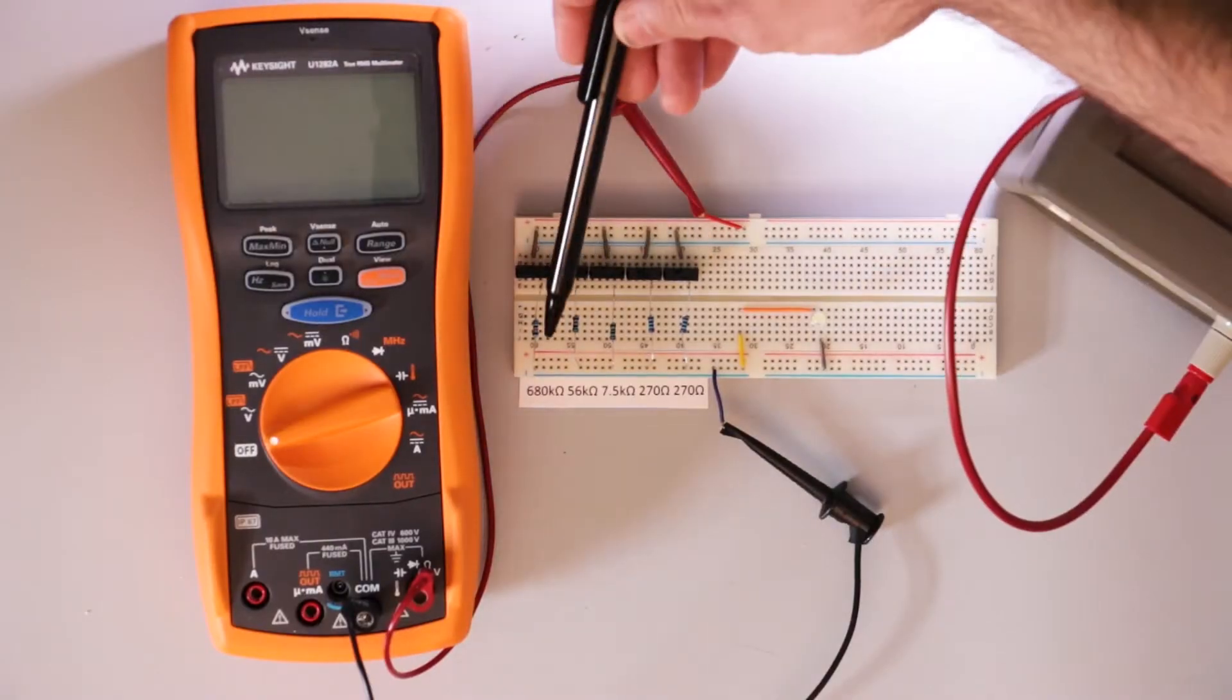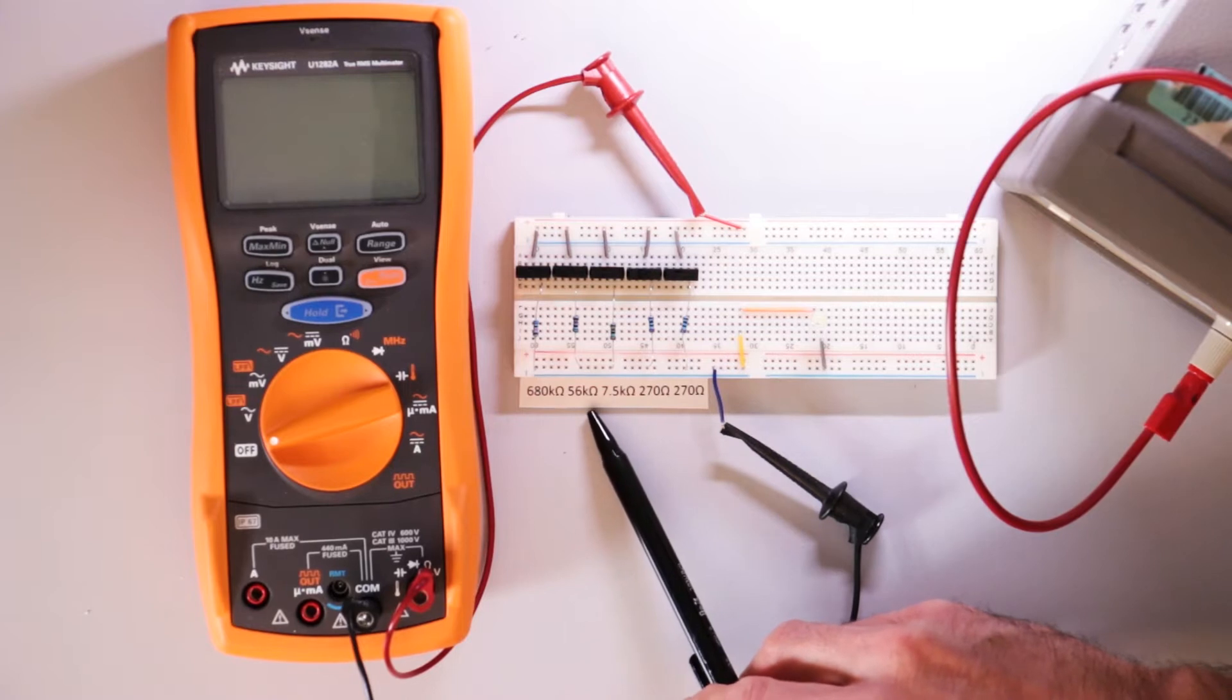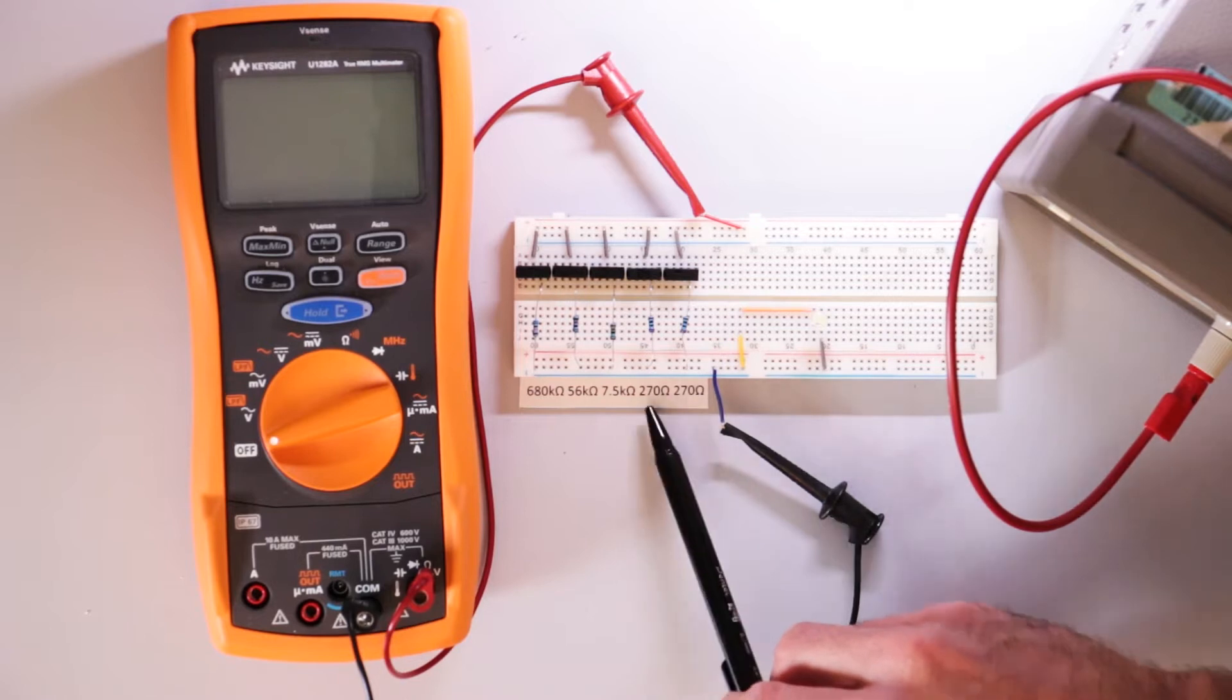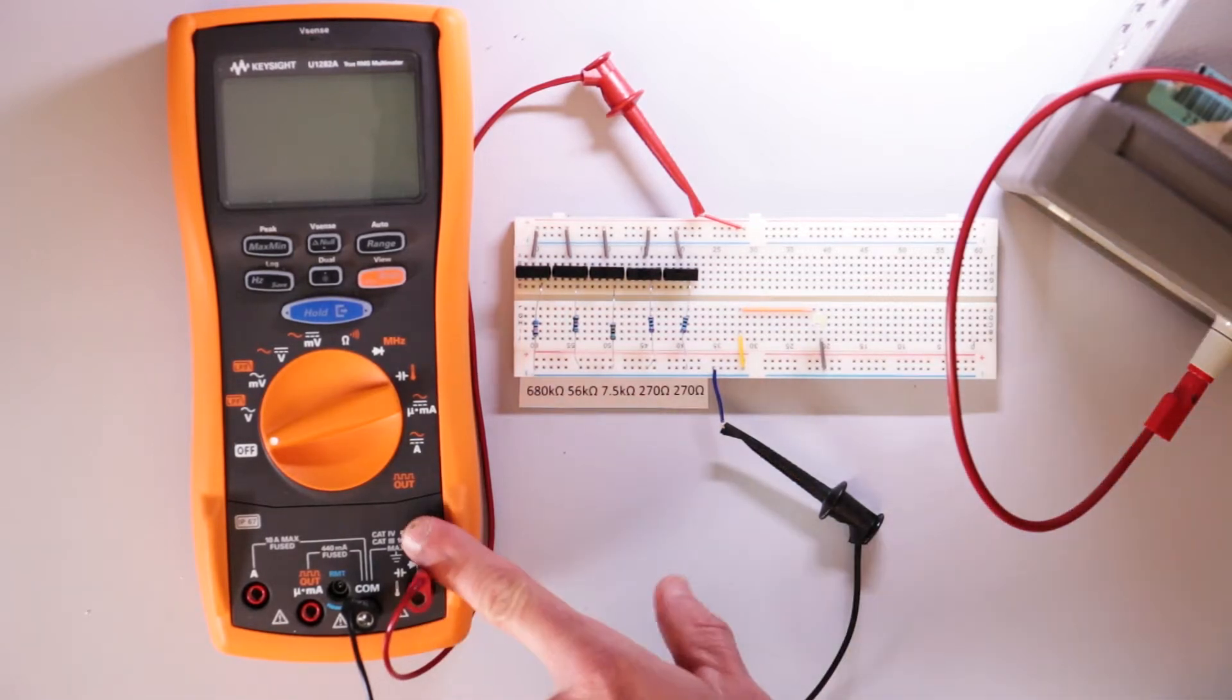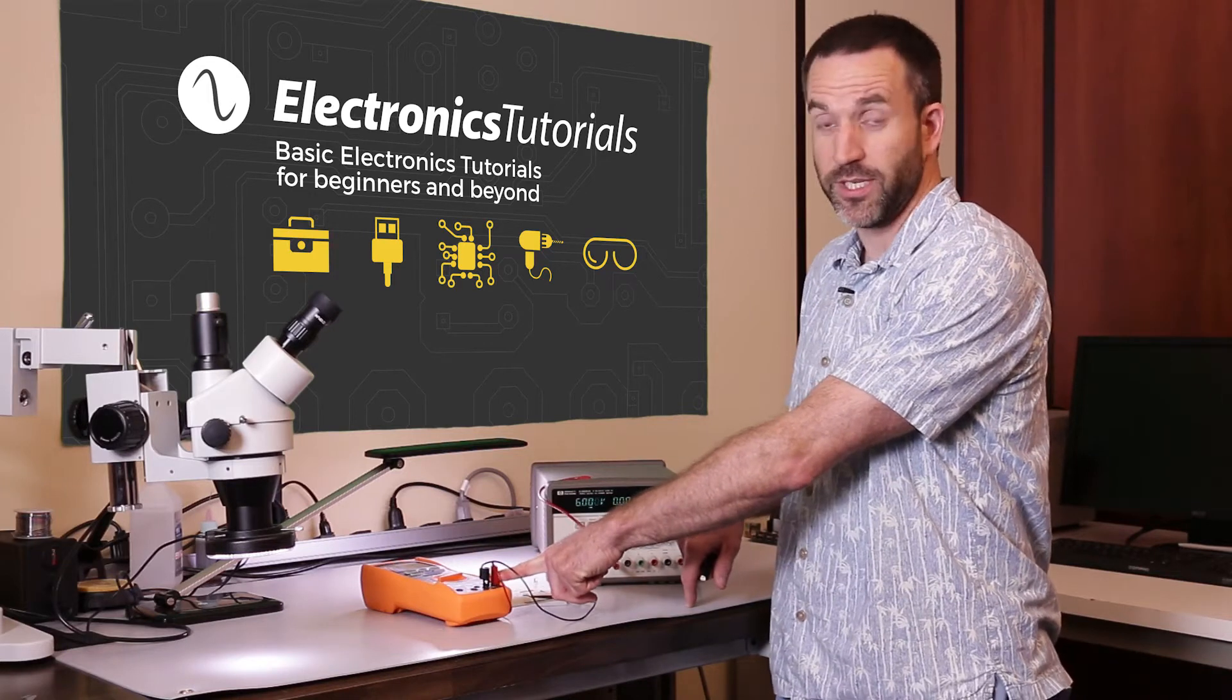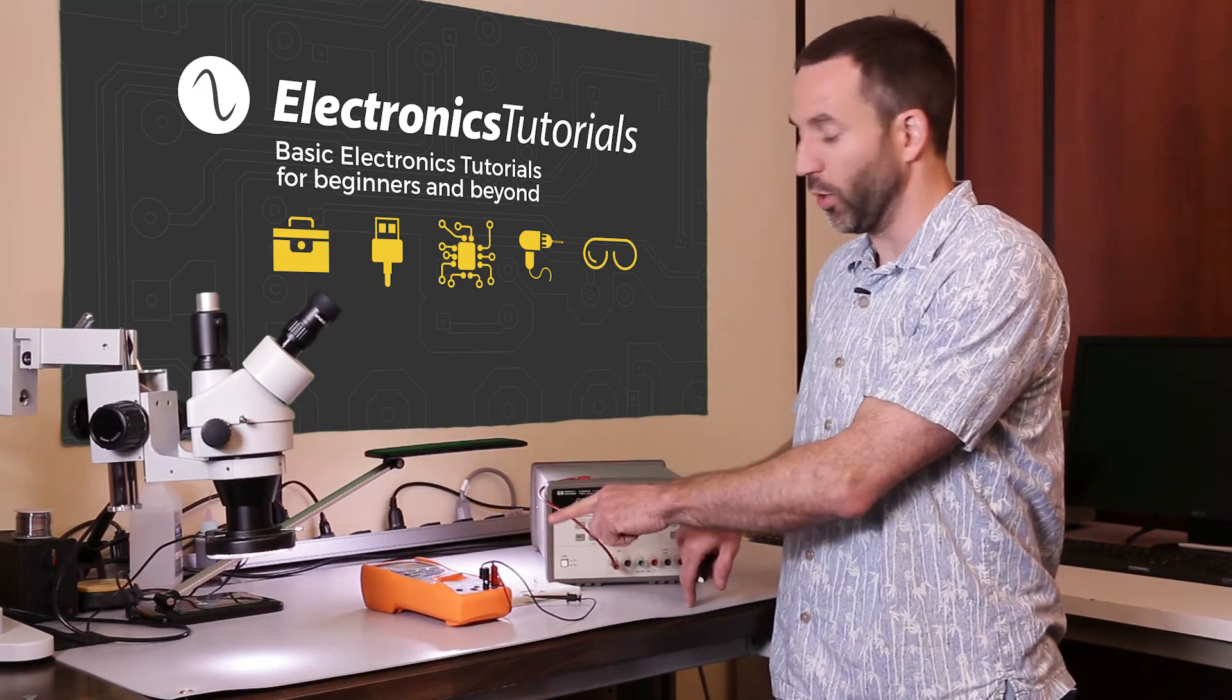What I have here are five resistors: a 680 kiloohm resistor, a 56 kiloohm resistor, a 7.5 kiloohm resistor, and two 270 ohm resistors. I have a DMM here, a digital multimeter. I'm going to be using it for measuring the resistance of the resistors and then equivalent resistance or total resistance.